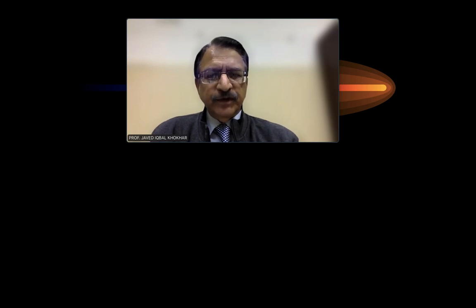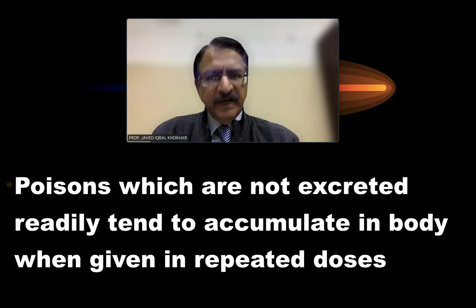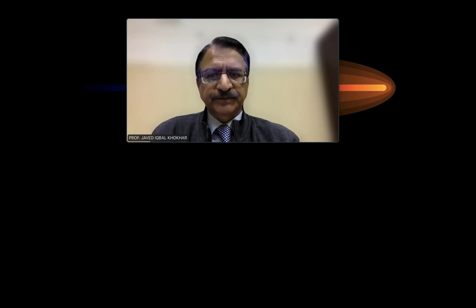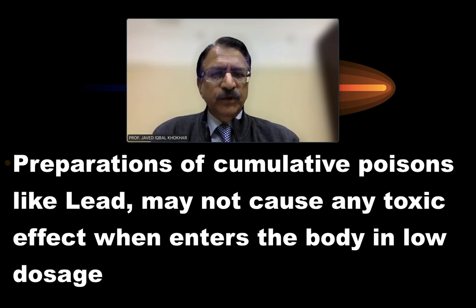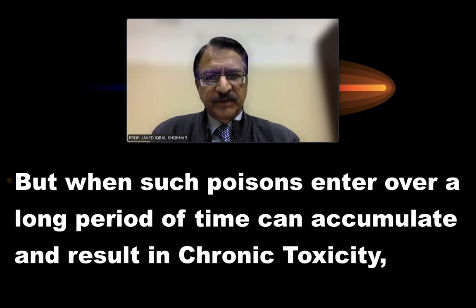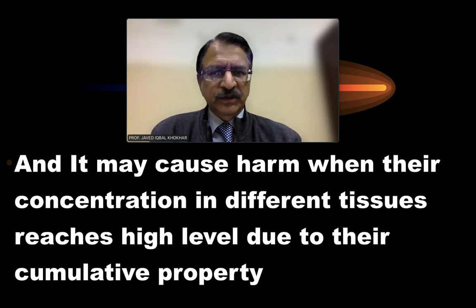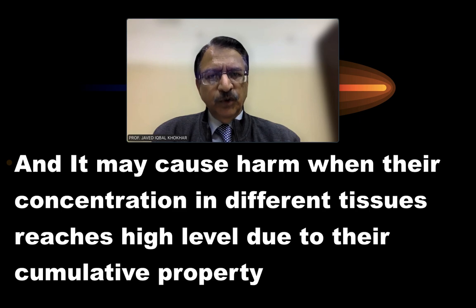Regarding cumulative action, poisons that are not excreted readily tend to accumulate in the body, and when given in repeated doses, they show poisonous effects. For example, lead may not cause any toxic effect at a low dose, but when such poisons enter over a long period, they accumulate and cause chronic toxicity when their concentration in tissues reaches a high level.